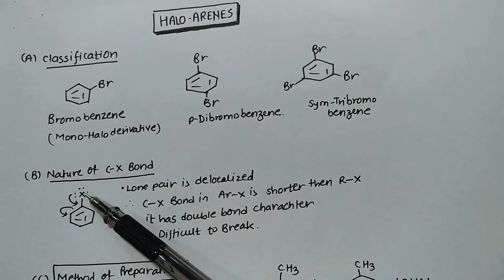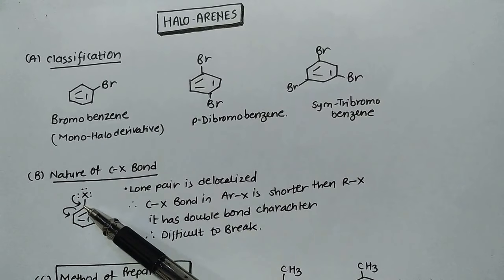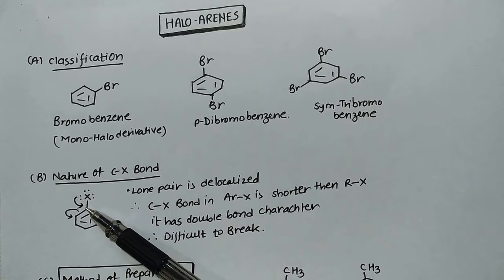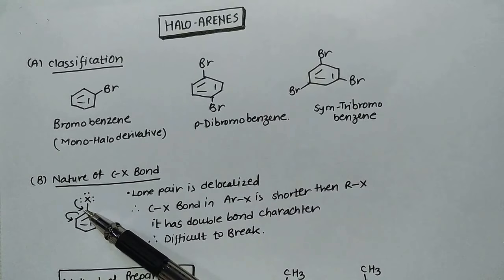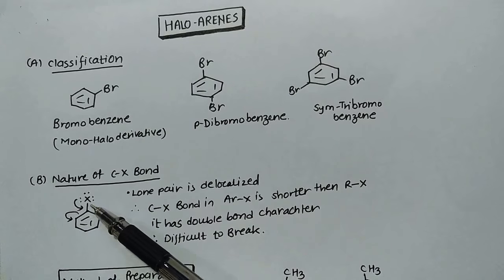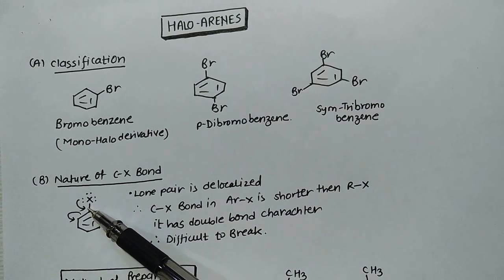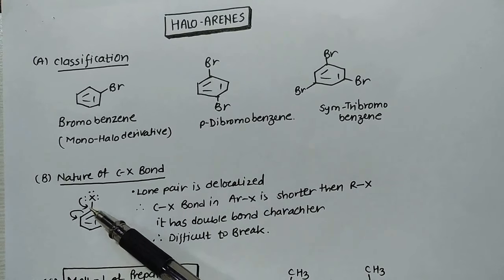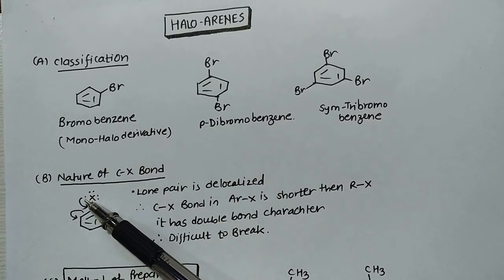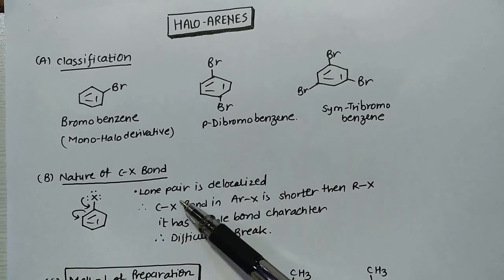In halogens, this carbon is SP2 hybridized. So this bond is having a shorter bond length, that is point number one. Also, this lone pair is resonance involved, meaning lone pair is delocalized.